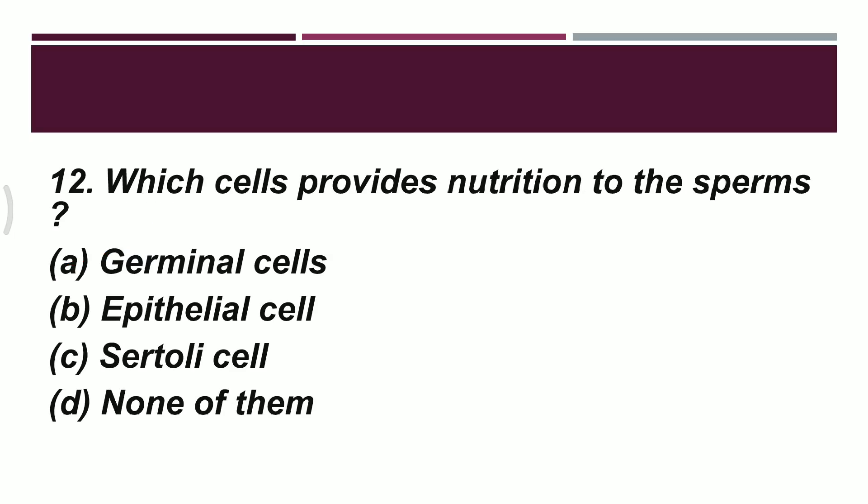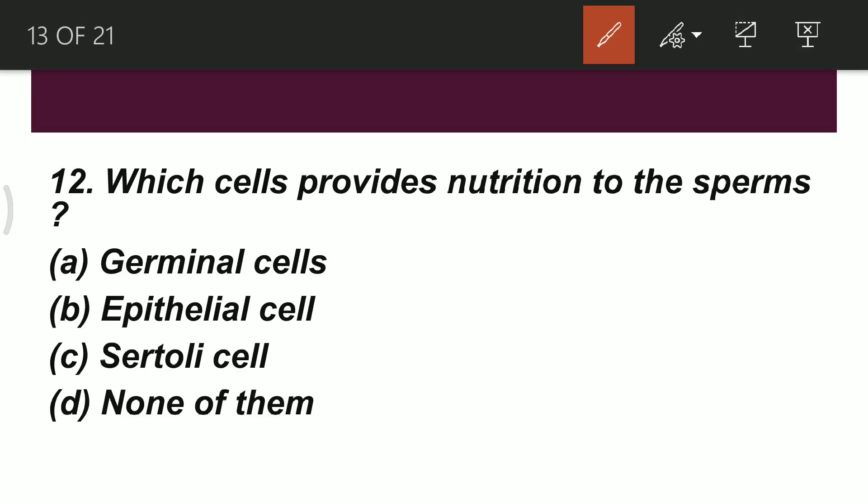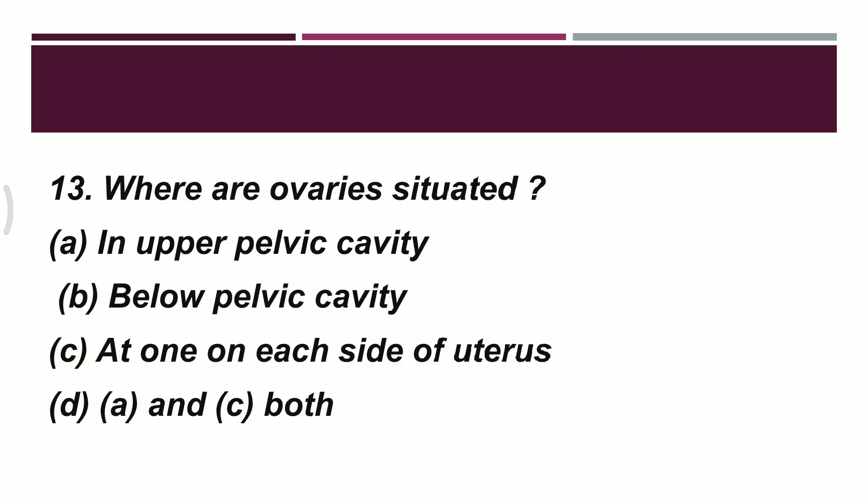Question 12: which cell provides nutrition to the sperm? Option A: germinal cell. Option B: epithelial cell. Option C: Sertoli cell. Option D: none of them. The correct option is C — Sertoli cells — which provide nutrition to the sperm after it has been formed, keeping it viable.